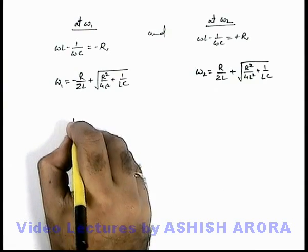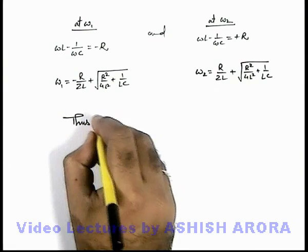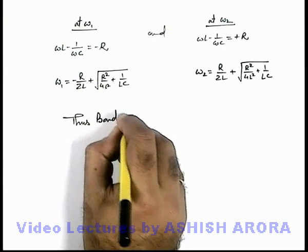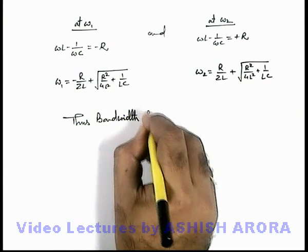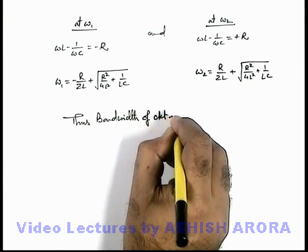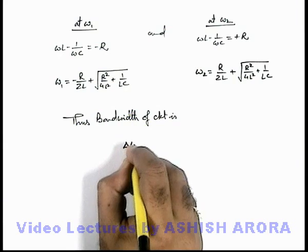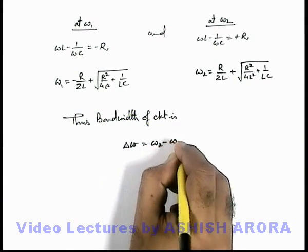Now from here we can calculate, we can write this bandwidth of circuit is delta omega. We can write omega 2 minus omega 1.